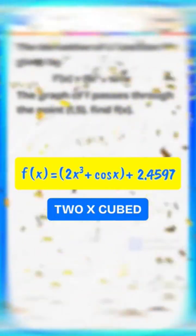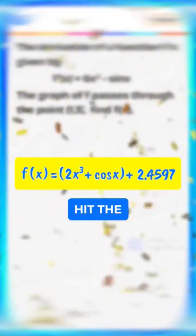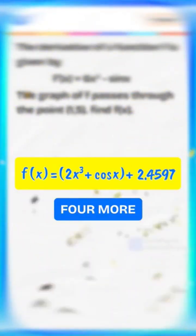So, the final function is f of x equals 2x cubed plus cosine x plus 2.4597. Hit the like button and follow for more questions.